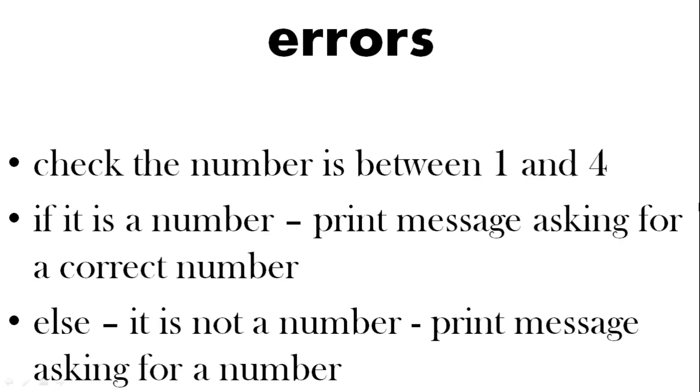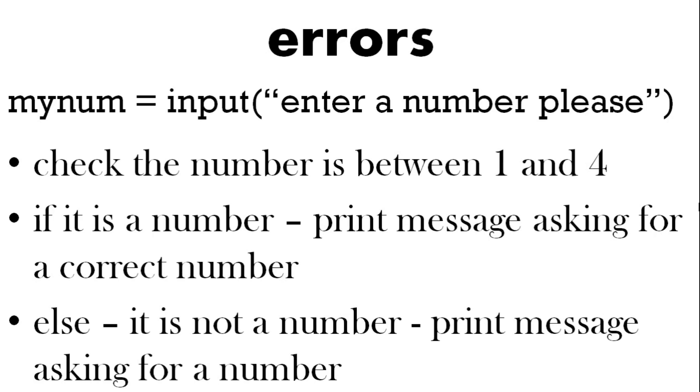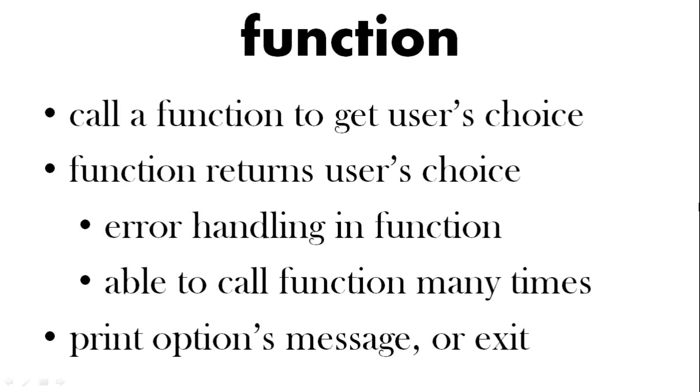The errors. Remember we've got the input. We need to check to see if the number is between one and a four. If it's not we need to print an error message asking the user to put in a correct number and if the user put something in that's not a number at all then we need an error message for that as well. Finally the function. So we're going to call a function to get the user's choice which is going to be one two three or four or to exit. And this function will also deal with the errors if the user puts in the wrong number or a wrong type.